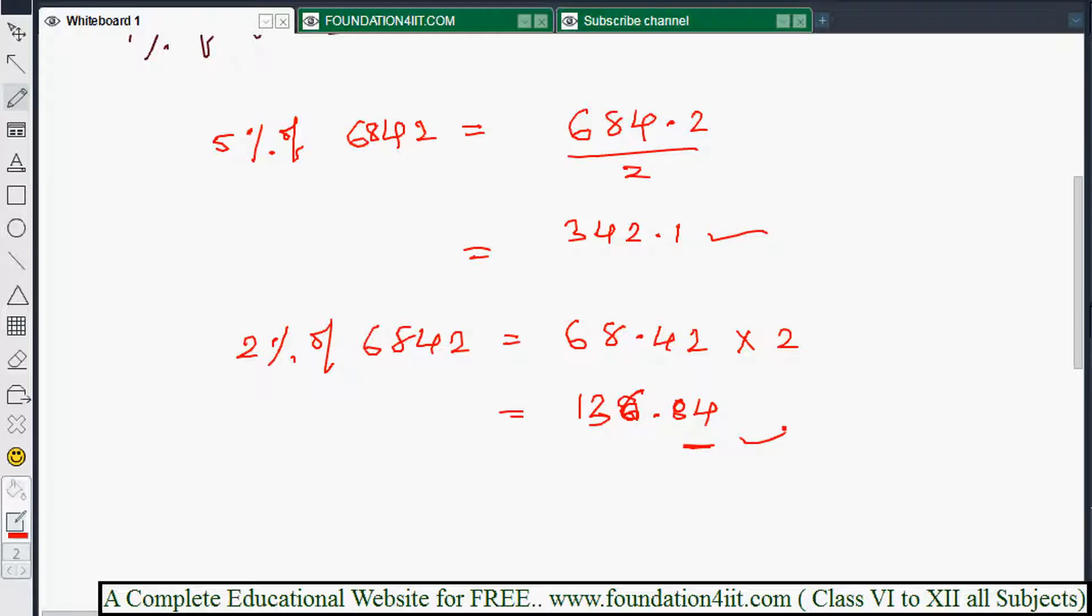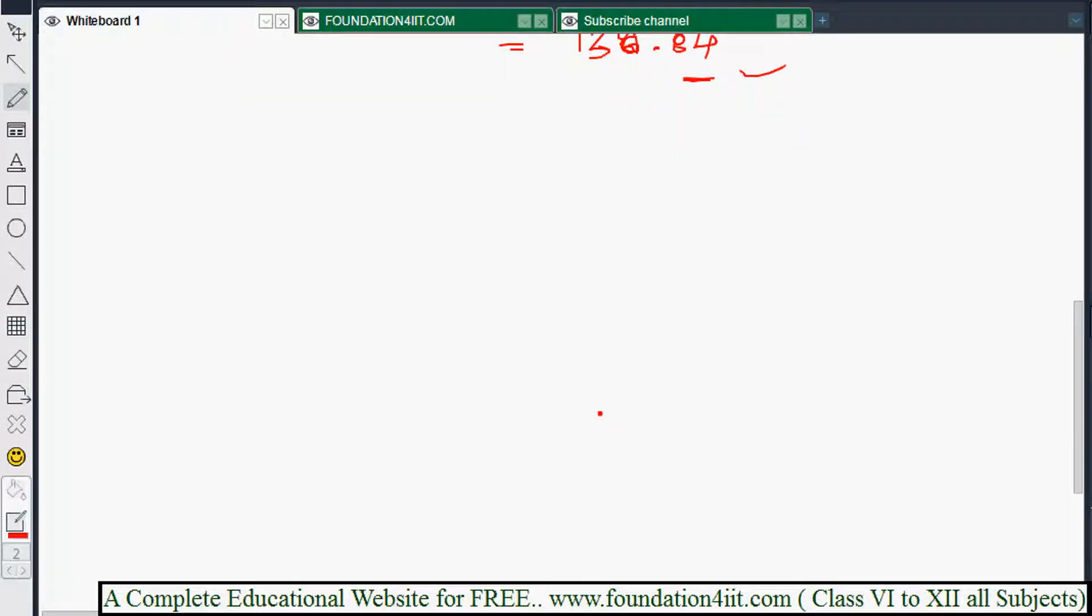Whenever they ask near two hundred, like ninety-nine percent or ninety-eight percent: ninety-nine percent of 6842. Generally what we'll do is: this is nothing but from hundred percent we subtract one percent. Hundred percent means the same total number, which is 6842. From this, one percent we should remove, which is 68.42. So 6842 minus 68.42, just do subtraction.